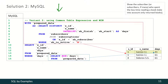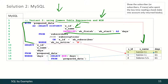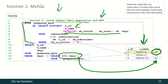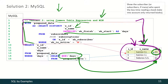Or we may use another approach with a common table expression and MIN function. Within the CTE we are selecting information about subscribers and time periods. Then we find out the minimal value of the time period column. And on the final step we select only those lines with time periods equal to this minimum. So this is how we get our final result.